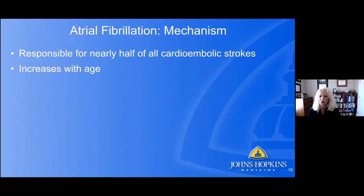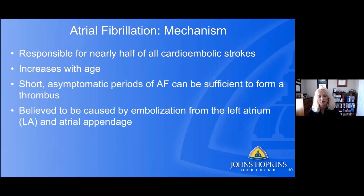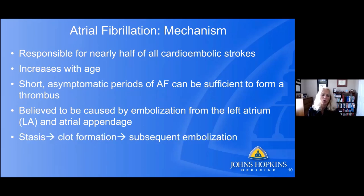Let's speak briefly about atrial fibrillation and its mechanisms. AFib is responsible for nearly half of all cardioembolic strokes and is known to increase with age — in older patients this is certainly something to consider. Short asymptomatic periods of atrial fibrillation can be sufficient to form a thrombus, believed to be caused by embolization from the left atrium and the atrial appendage. The mechanism involves stasis of flow, which leads to clot formation that can subsequently embolize.